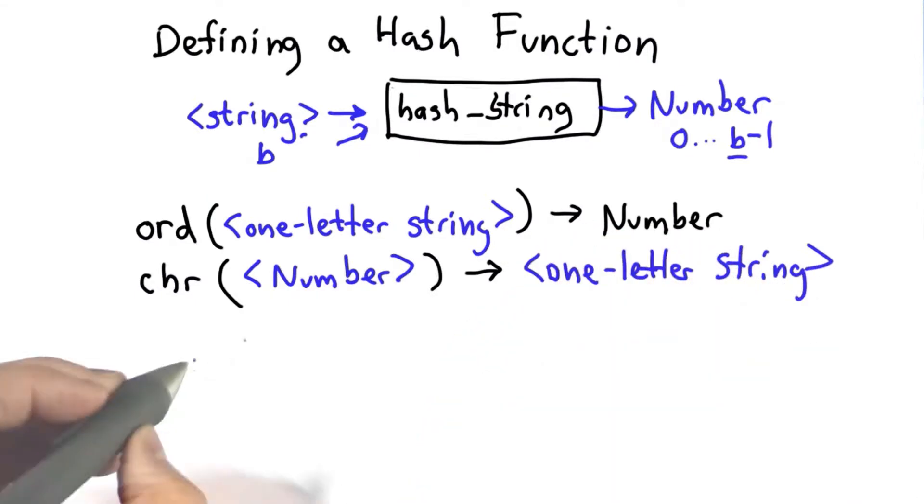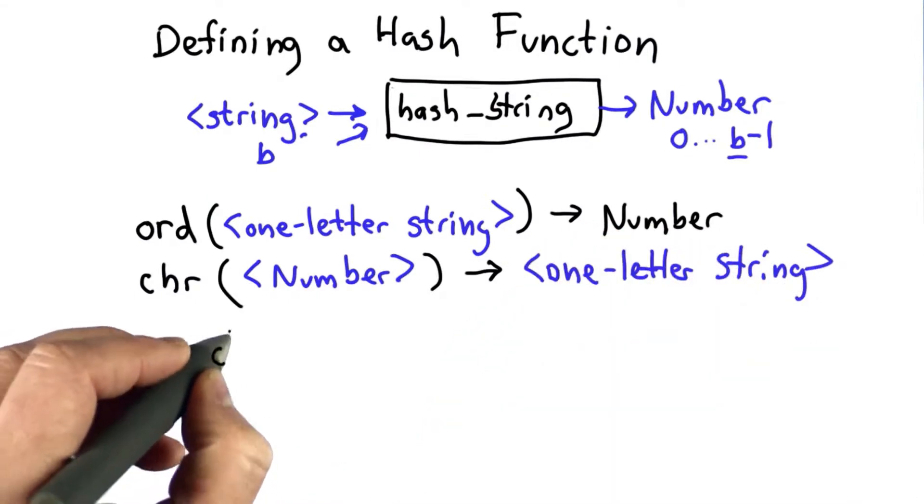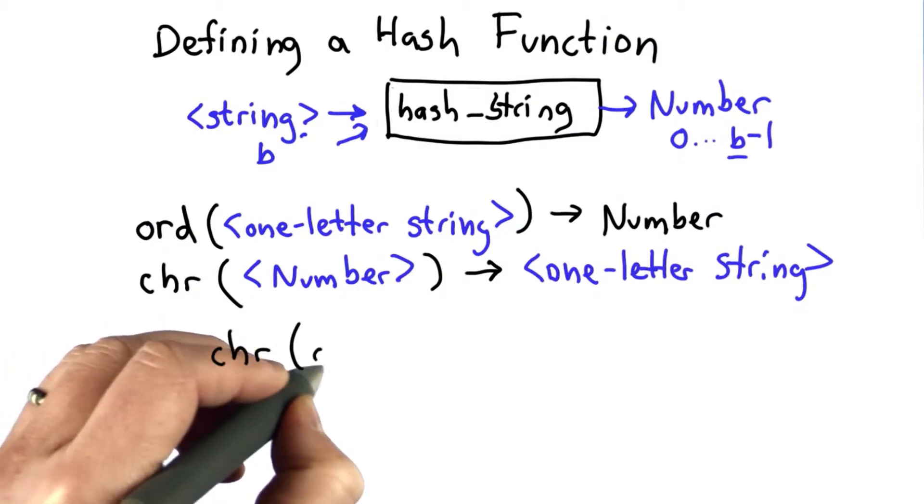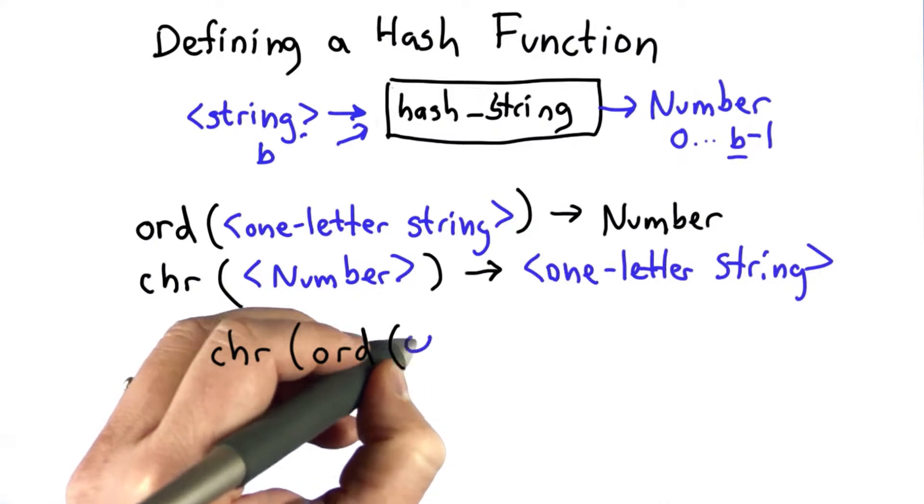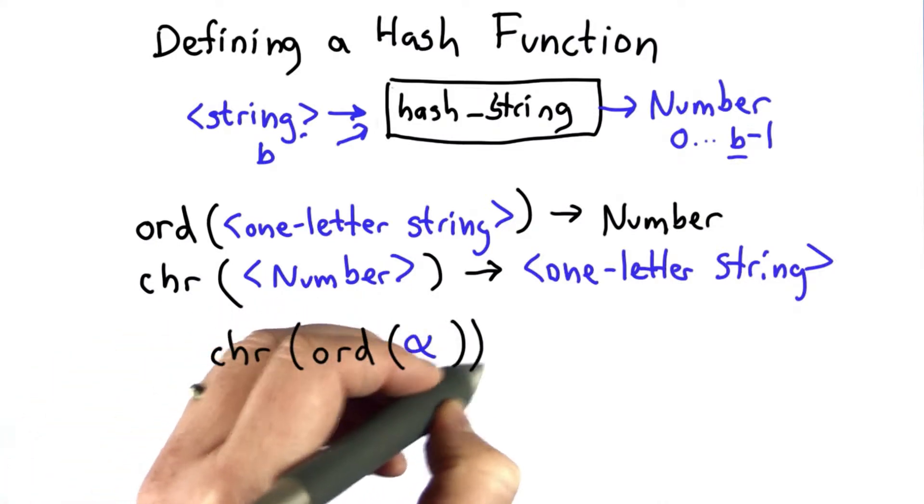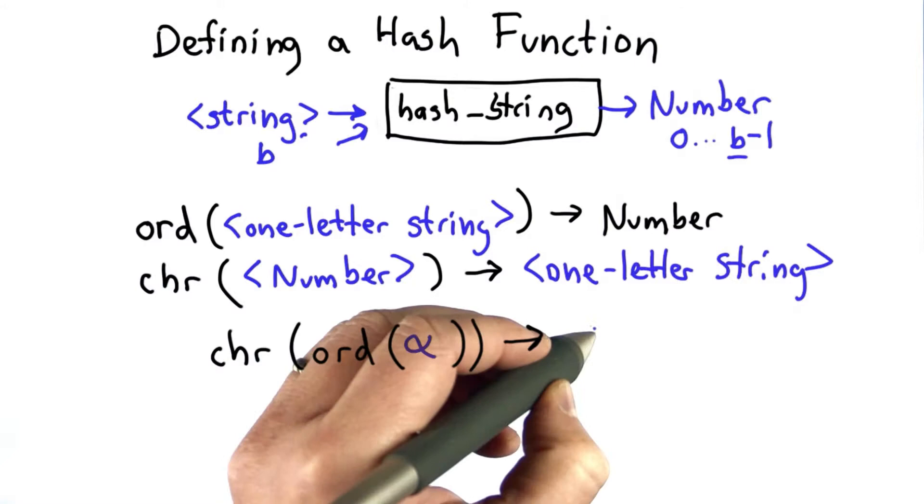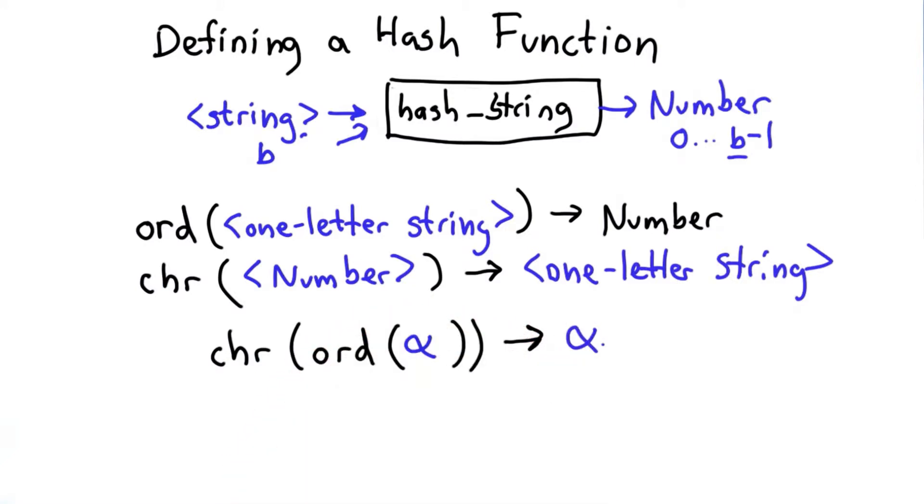And the property these functions have is their inverses, that if we take the character corresponding to the ordinal, corresponding to any one letter string, we'll call that alpha, what we get as a result is the same alpha that we passed in.